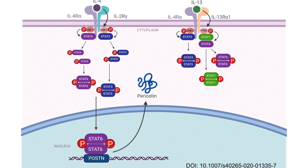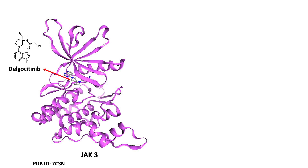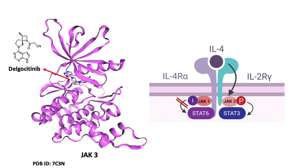Many proteins essential for skin barrier function are downregulated or inhibited in this way. Dalgocitinib is a small molecule compound that binds to the ATP binding site of the tyrosine kinase and successfully blocks phosphorylation and activation of STAT proteins.